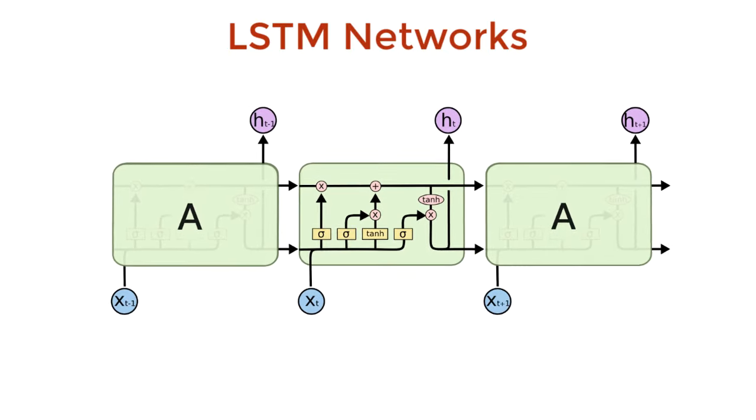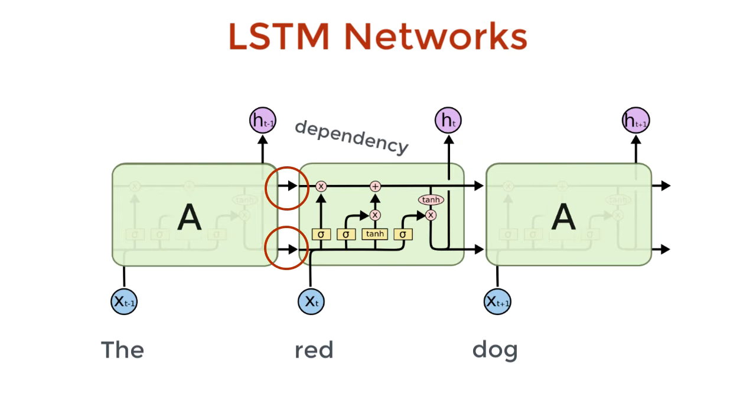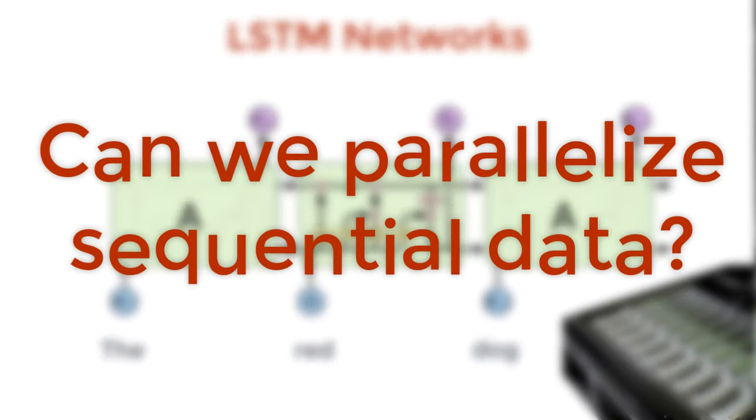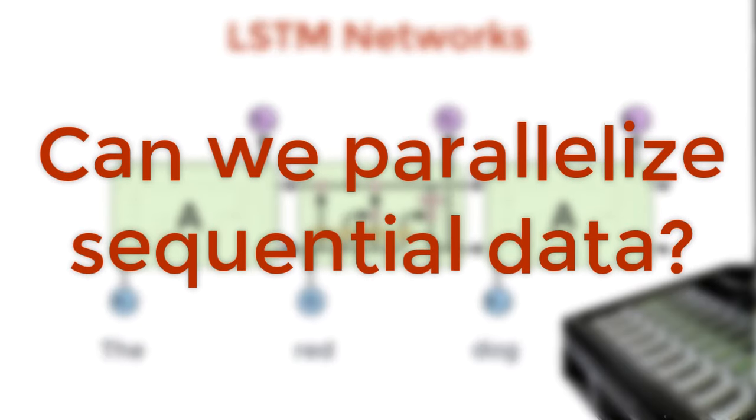For these RNN and LSTM networks, input data needs to be passed sequentially or serially, one after the other. We need inputs of the previous state to make any operations on the current state. Such sequential flow does not make use of today's GPUs very well, which are designed for parallel computation. So, question: How can we use parallelization for sequential data?